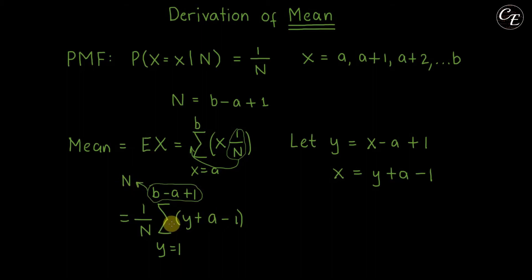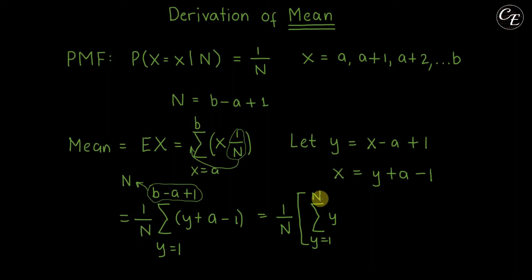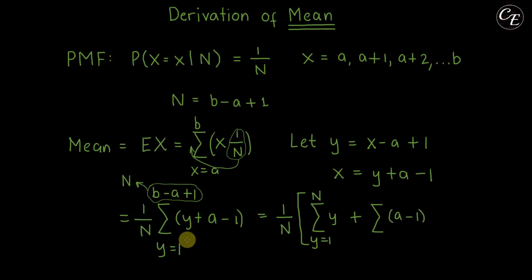We can distribute the summation over y and a minus 1. So we have 1 over n times the summation of y from y equals 1 to n, plus the summation of a minus 1 from y equals 1 to n.